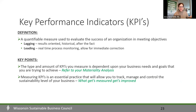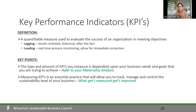A key performance indicator is a qualifiable measure used to evaluate the success of an organization in meeting objectives. Lagging is results-oriented, historical, after the fact; leading is real-time processing and monitoring allowing for immediate correction. Either way, start with where you're at — you want to ideally get to the point where you can see and evaluate KPIs in real time, though that takes some sophistication. Set it as a goal if you're not currently there.